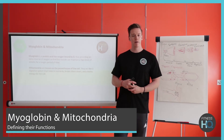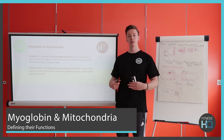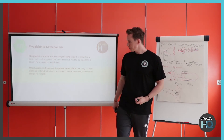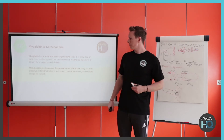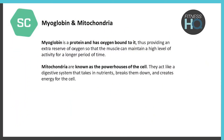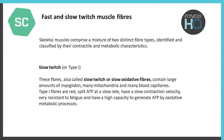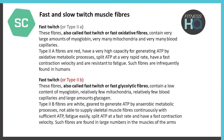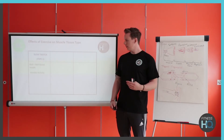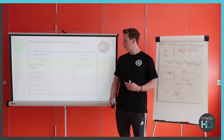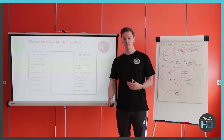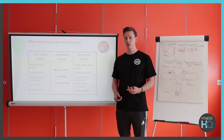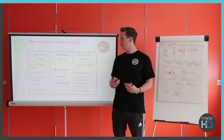Myoglobin — think of it this way: hemoglobin carries oxygen in the blood, and myoglobin carries oxygen in the muscle. It has oxygen bound to it, and it transports that oxygen to the mitochondria within the muscle, which then uses the oxygen. We've covered fast and slow twitch fibers in Level 2, so feel free to go back to that unit if you're struggling with this part.